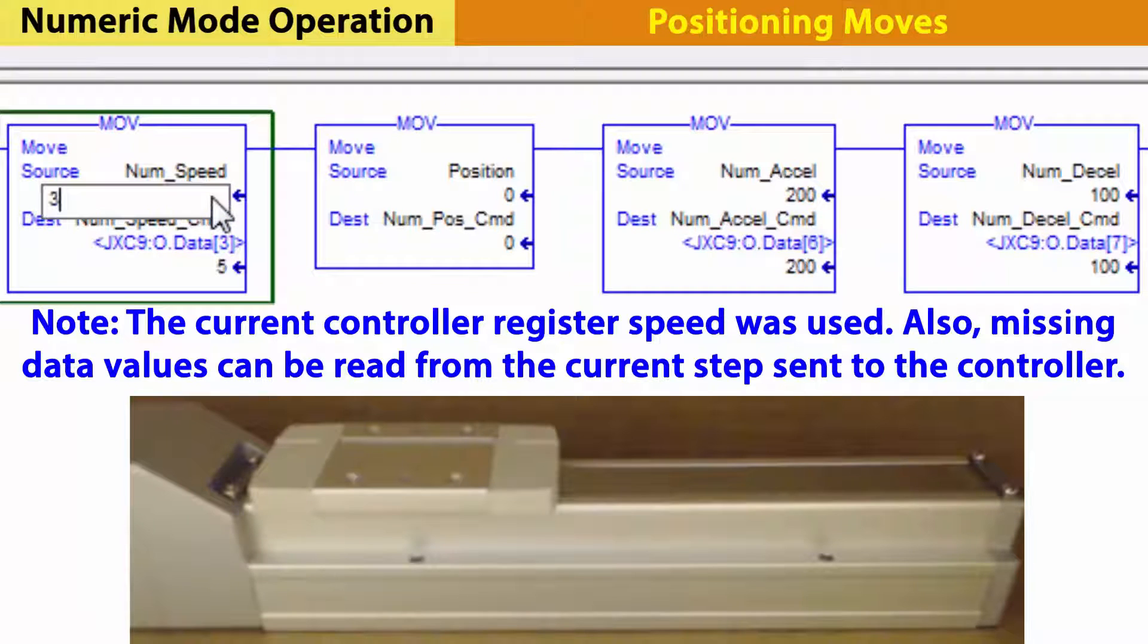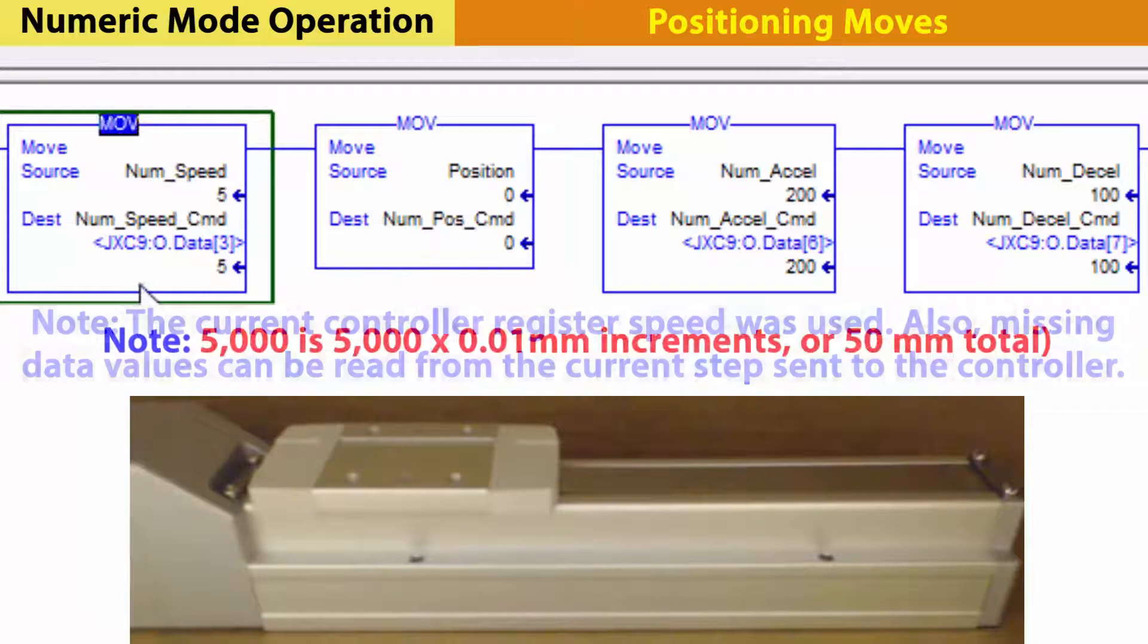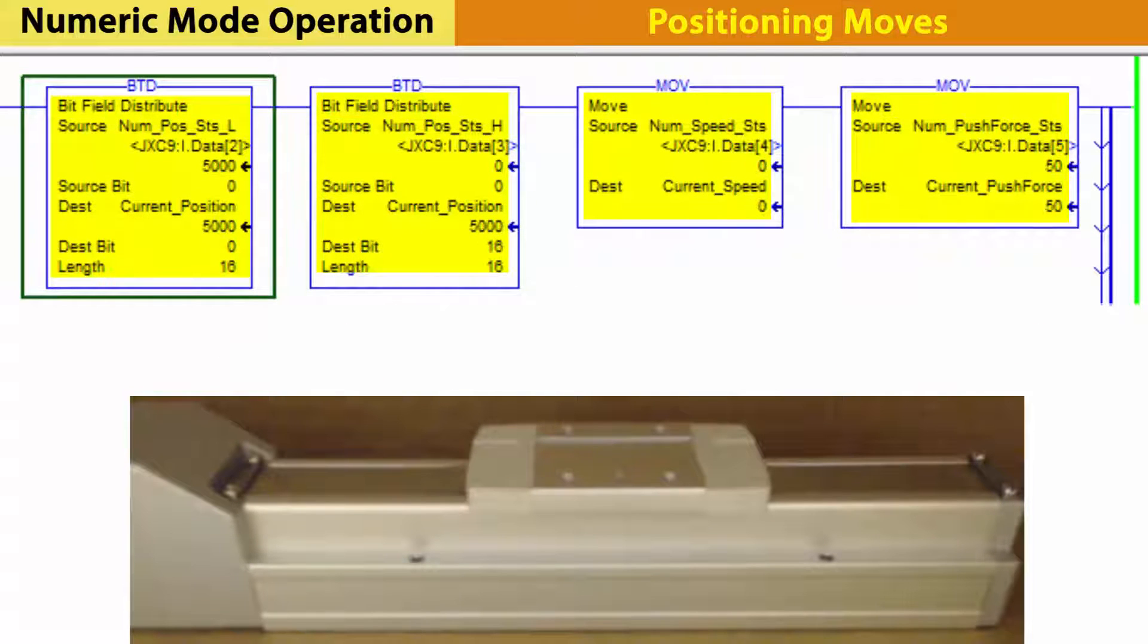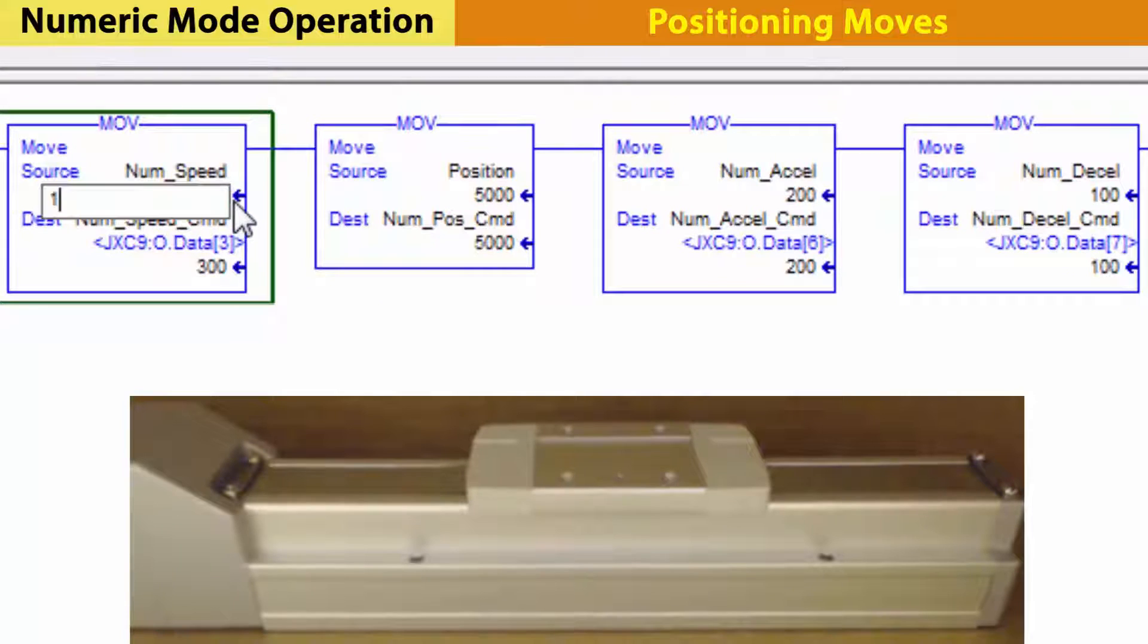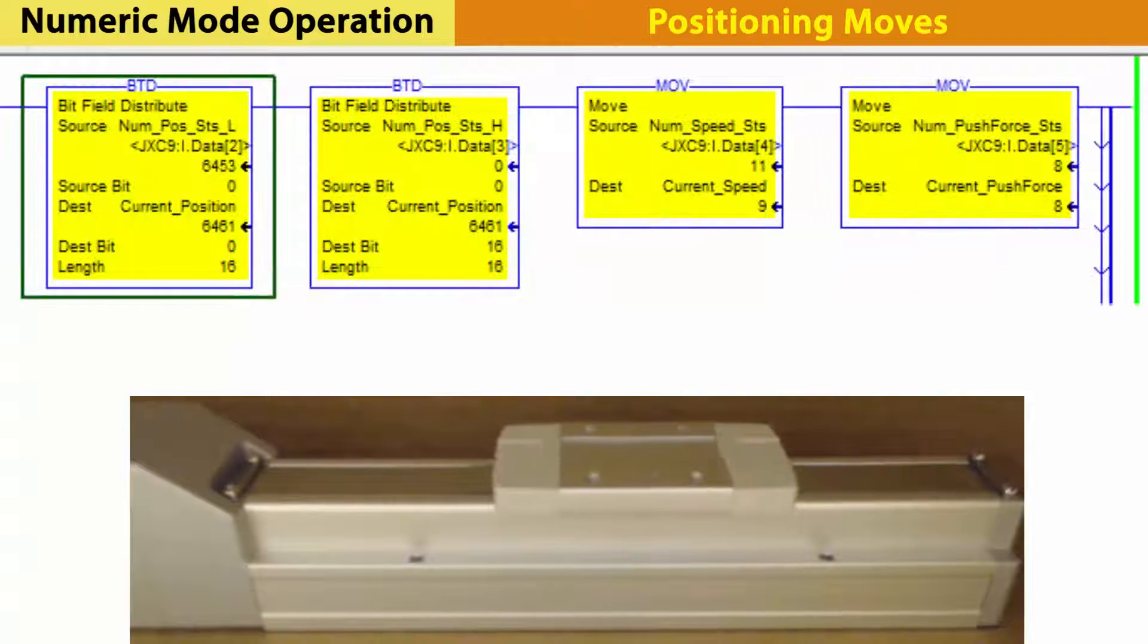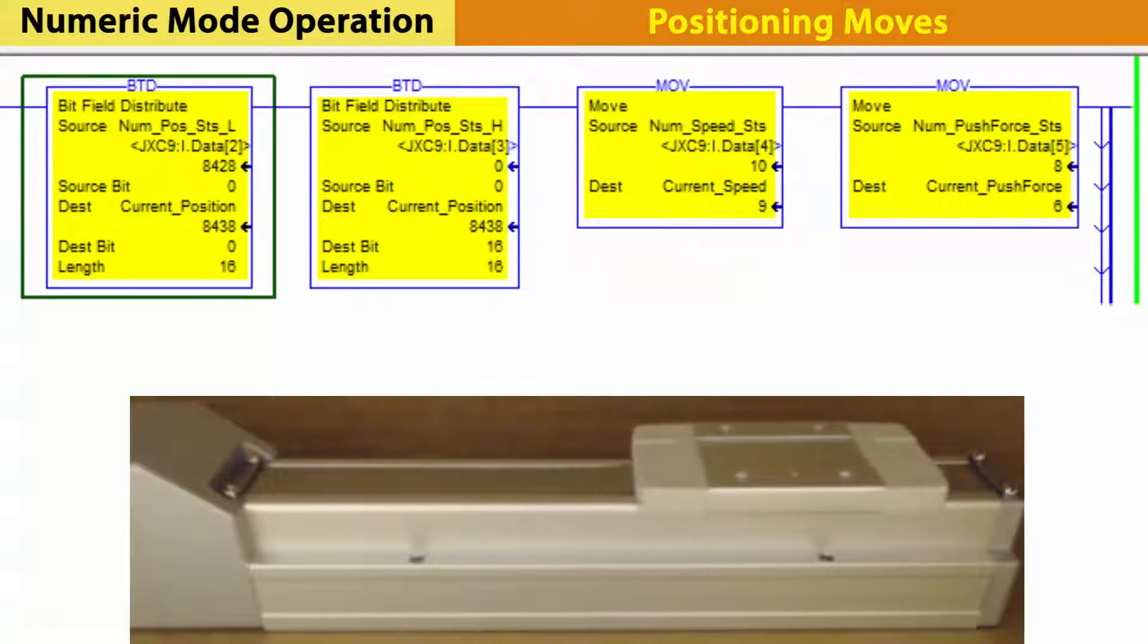Now, change the speed and position a few times for practice. Try a speed of 300 and a position of 5000, then a speed of 10 and a position of 10,000. Did it move as expected?